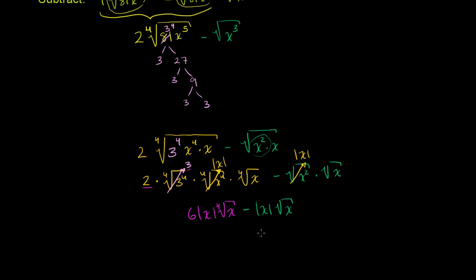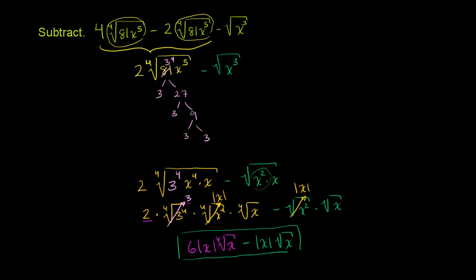We can't simplify further by subtracting, because this is a 4th root and that is a regular principal square root — if they were the same root, maybe we could simplify more. So we are all done and have fully simplified it. If you make the assumption that this is defined for real numbers, then what's under these radicals has to be positive, so the domain requires x to be greater than or equal to 0. In that case, the absolute value of x is the same as x, and you could get rid of the absolute value signs.